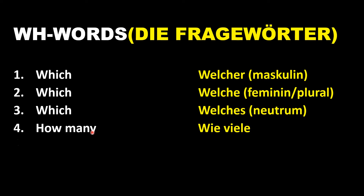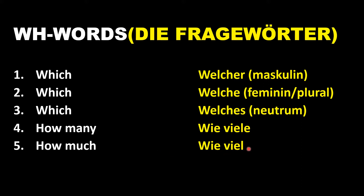The fourth question word is 'how many', that is Wie viele — do remember that extra E. Then the next question word is 'how much', that is Wie viel — no extra E. Please take care of these two: Wie viel and Wie viele. The difference is: when we can count something, we use Wie viele; when we cannot count it, we use Wie viel. And the last question word will be 'whose', that is Wessen.